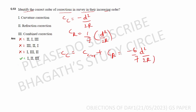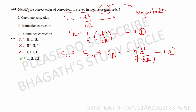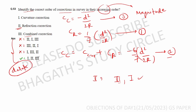Now in increasing order by magnitude: the combined correction is smallest, then refraction correction, then curvature correction is largest. So in increasing order by magnitude the answer places combined correction first, then refraction, then curvature. The answer is option 1 for this first question.